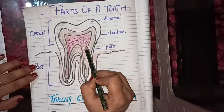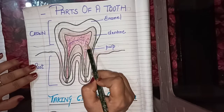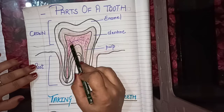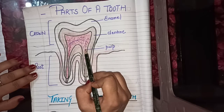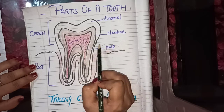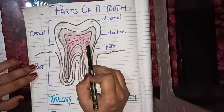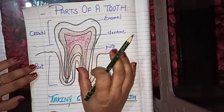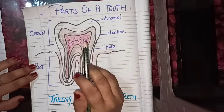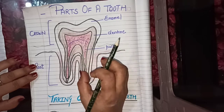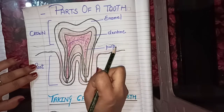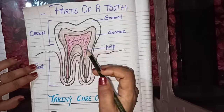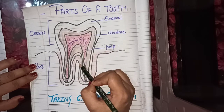Inside the pulp lie tooth nerve endings. Pulp is very soft. Pulp protects the tooth also.